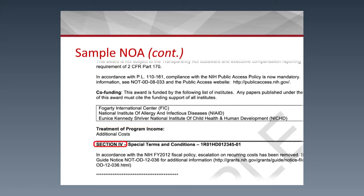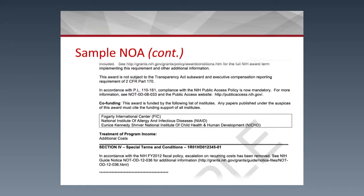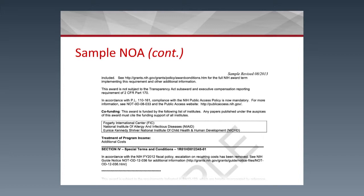Section 4 is probably the most important section because it talks about your specific grant and project — not just the general terms and conditions that cover all grants, but the terms specific to this particular grant. It will tell you if there are any special reporting requirements. Normally, grants require a report every year, but for example, this section might indicate a report is needed every six months. It is important to read this section carefully.